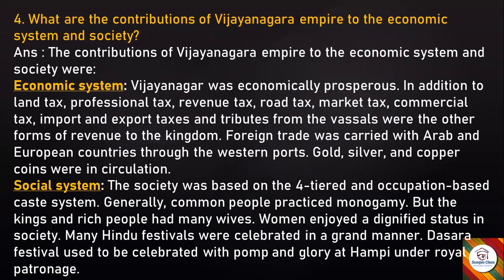Under the social system: society was based on a four-tiered, occupation-based caste system. Generally common people practiced monogamy, but kings and rich people had many wives. Women enjoyed a dignified status in society. Many Hindu festivals were celebrated in a grand manner — the Dussehra festival used to be celebrated with pomp and glory at Hampi under royal patronage.